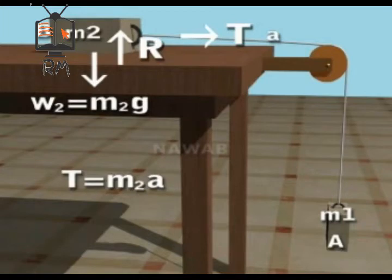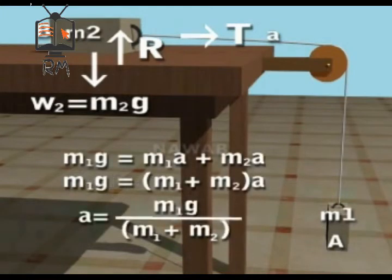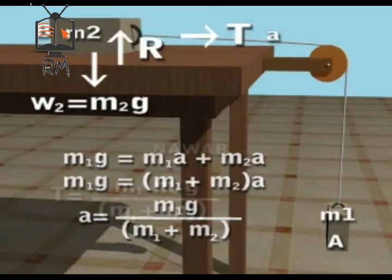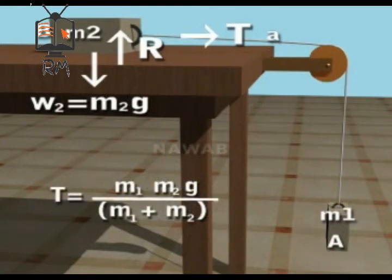Putting the value of T, we get M1G = M1A + M2A, which gives M1G = (M1 + M2)A, or A = M1G / (M1 + M2). In order to find the value of T in the string, we put the value of A back into the equation. Hence, T = M1M2G / (M1 + M2).